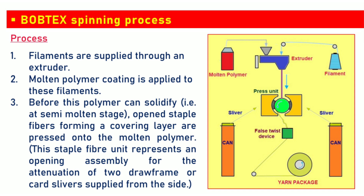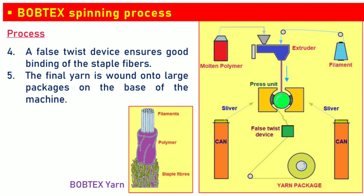Let's understand the Bobtex spinning process in detail. The primary feedstock material is filaments, which are supplied through an extruder. A molten polymer coating is applied to these filaments. Before this polymer can solidify, open staple fibers forming a covering layer are pressed onto the molten polymer. This staple fiber unit represents an opening assembly for the attenuation of two draw frame or card slivers supplied from the side. A false twist device ensures good binding of the staple fibers, and the final yarn is wound onto large packages at the base of the machine.